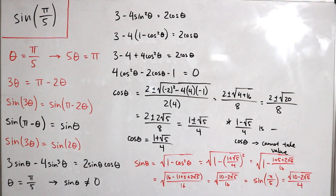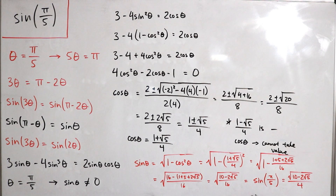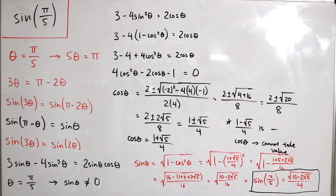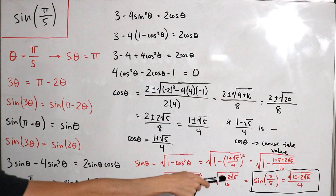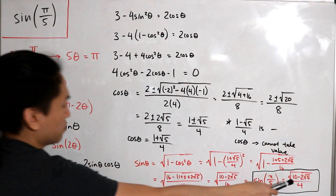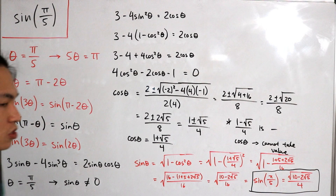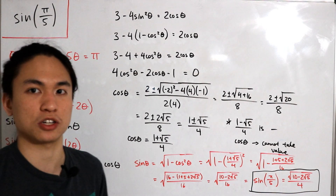Just like that, we have found our exact value — not a numerical approximation. If you plug this expression into a calculator, it will come out to the same decimal expansion as sine of π over five. Pretty cool!